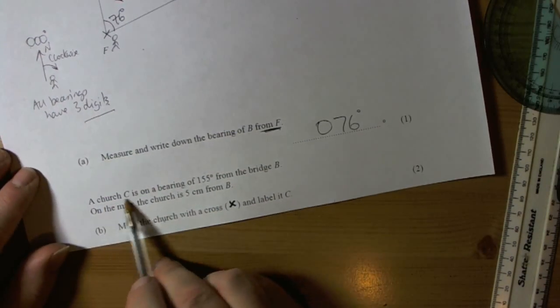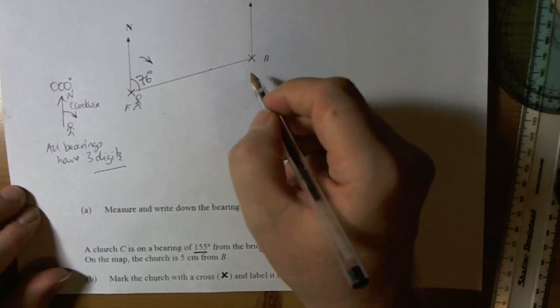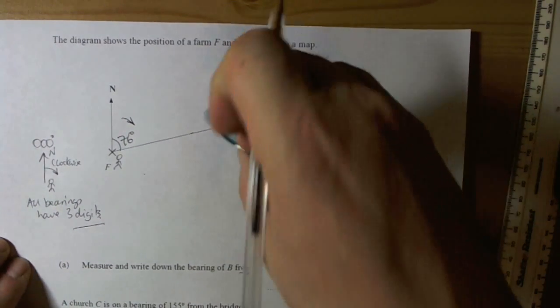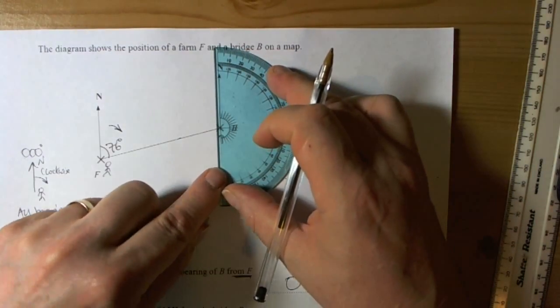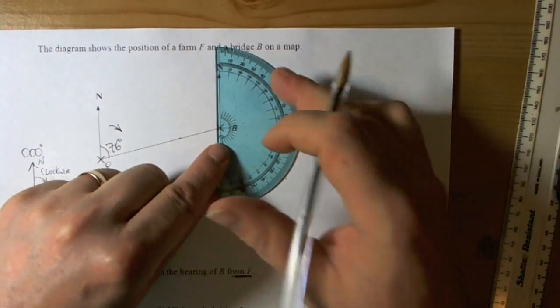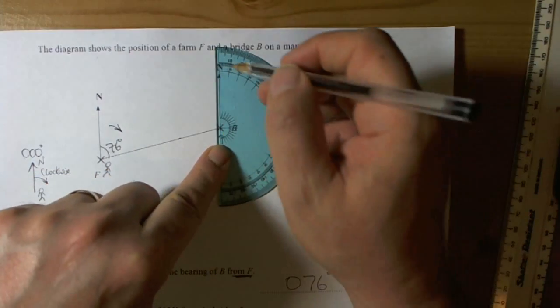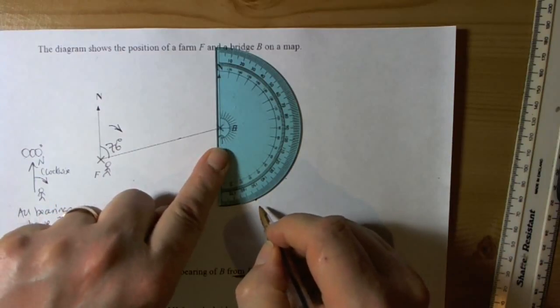It then tells me that a church is on a bearing of 155 from the bridge. So now we're stood at the bridge and we're measuring a bearing of 155. Again, we line up a protractor with the centre at the point where we're from, and we measure up zero as north. It's telling us to go 155, so in a clockwise direction we measure 155. Put our dot down.